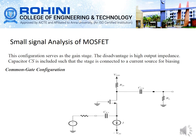This configuration serves as a gain stage. The disadvantage is that it has high output impedance, and a capacitor is included so that the stage is connected to the current source for biasing. Next is the common gate configuration, where the gate terminal is grounded.